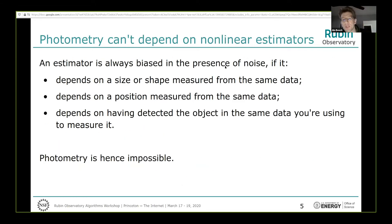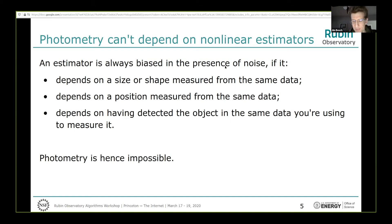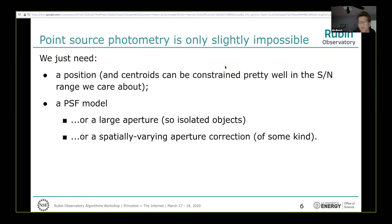An estimator is always biased in the presence of noise if it's non-linear. Even a nominally linear flux estimate will be biased if it depends on shape or size measured from the same data — Conrad showed this quantitatively — or if it depends on position from the same data, or on having detected the object at all. The result is that photometry is impossible. Point source photometry is only slightly impossible, which is why it's useful. For point source photometry, you just need a position and a PSF model or large aperture, and a spatially varying aperture correction of any kind is sufficient.